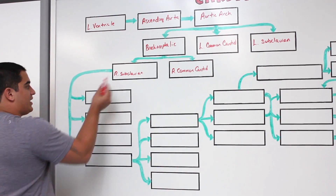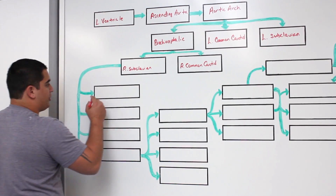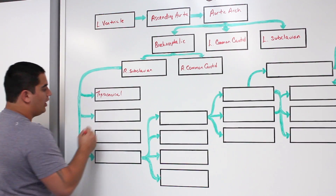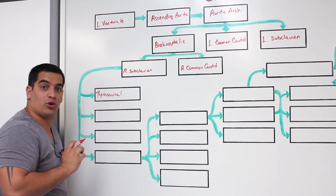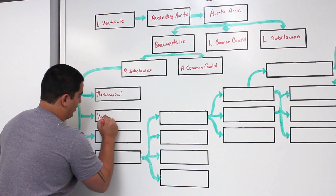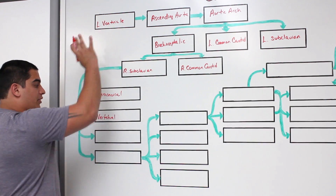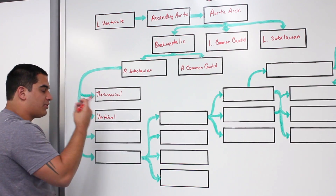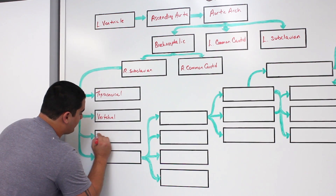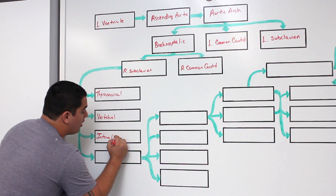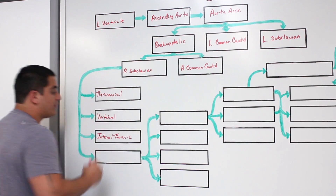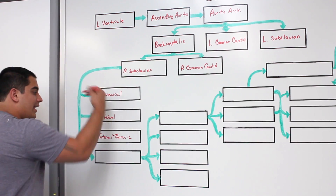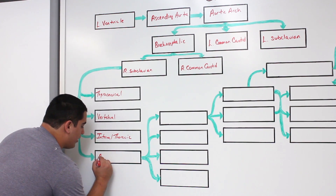The right subclavian is going to give off many branches along its way. One of the branches is called the thyrocervical branch. It also gives off arteries that supply the posterior part of the circle of Willis — those are called the vertebral arteries, which run up through the transverse foramina. Then it gives off some that supply the internal part of the thorax, called the internal thoracic arteries. Then it continues as what's called the axillary artery.